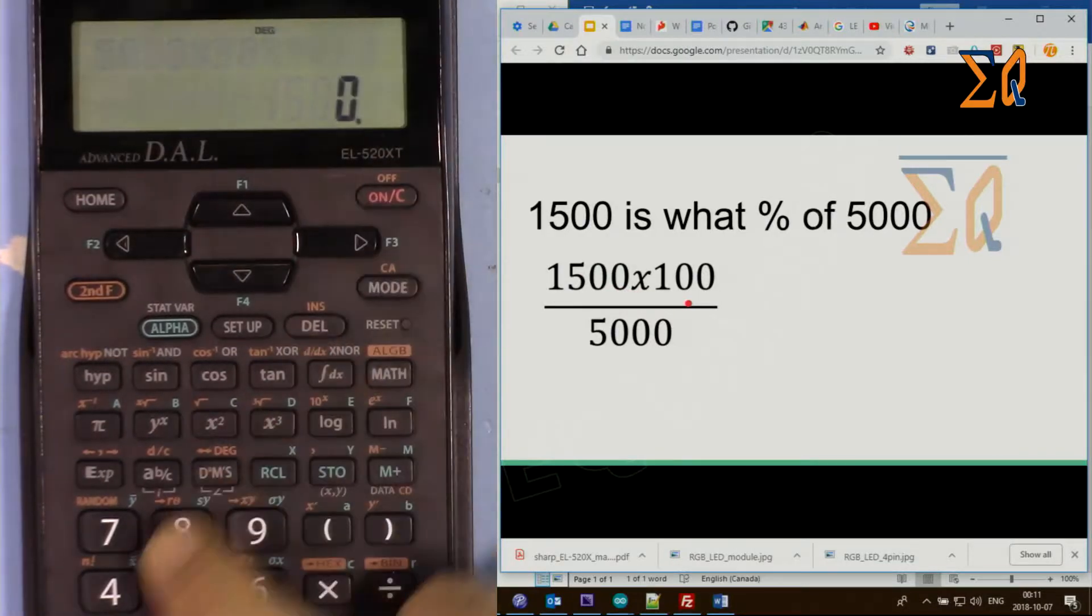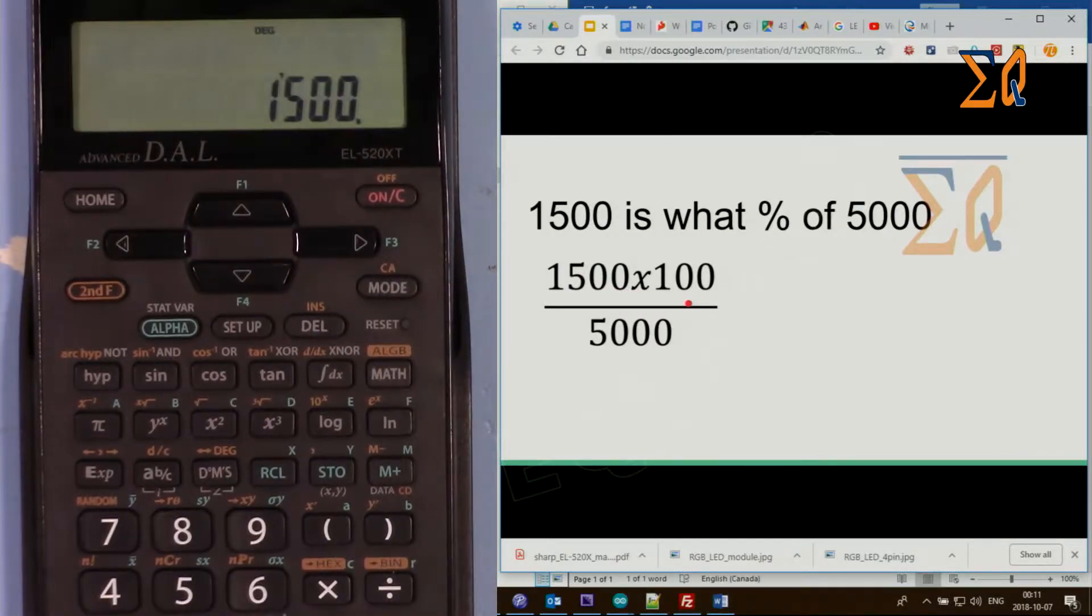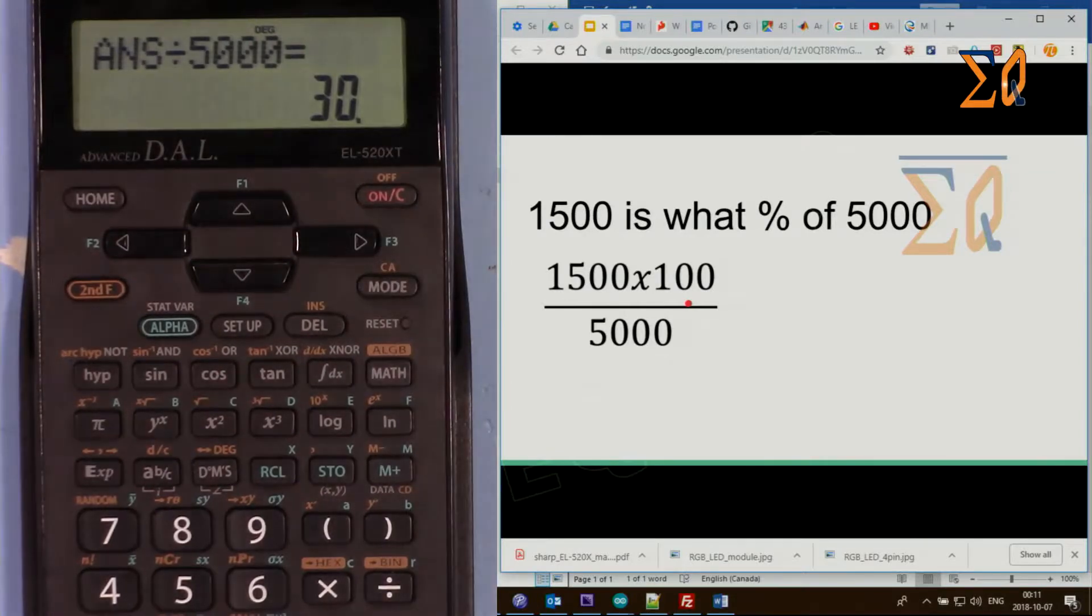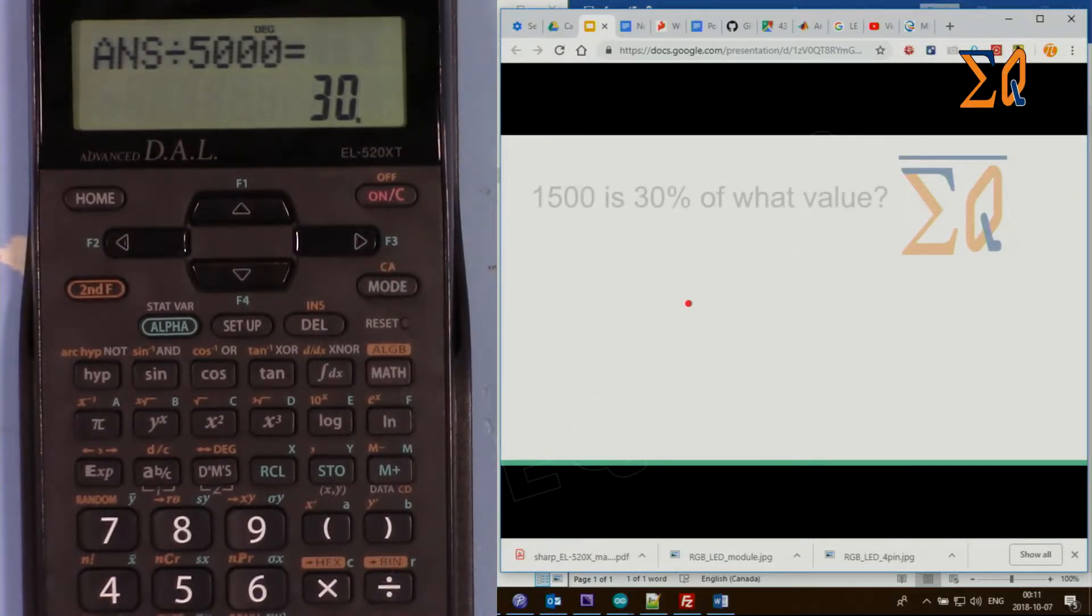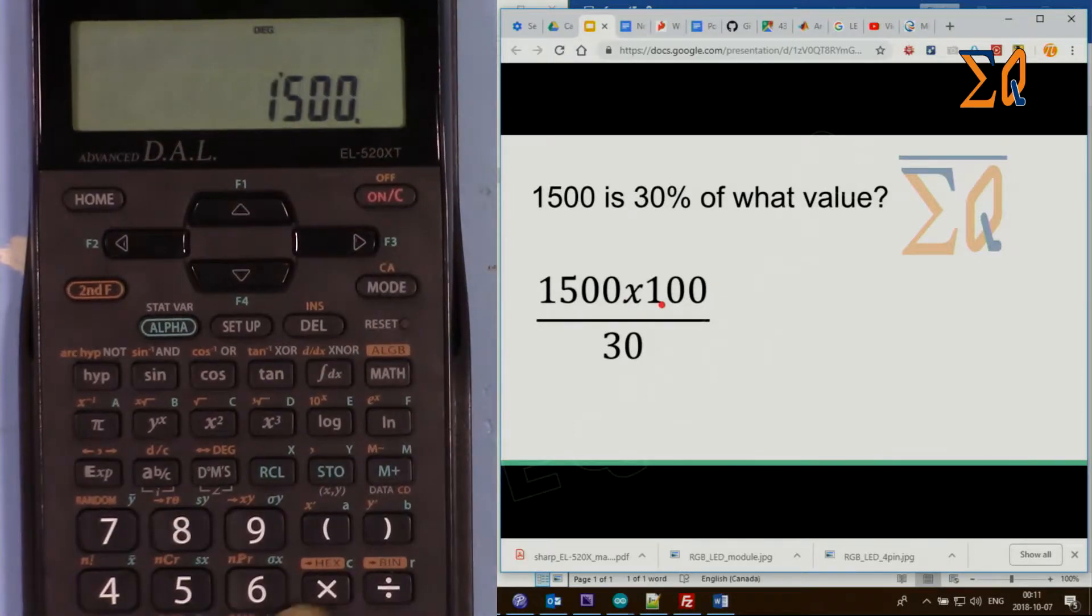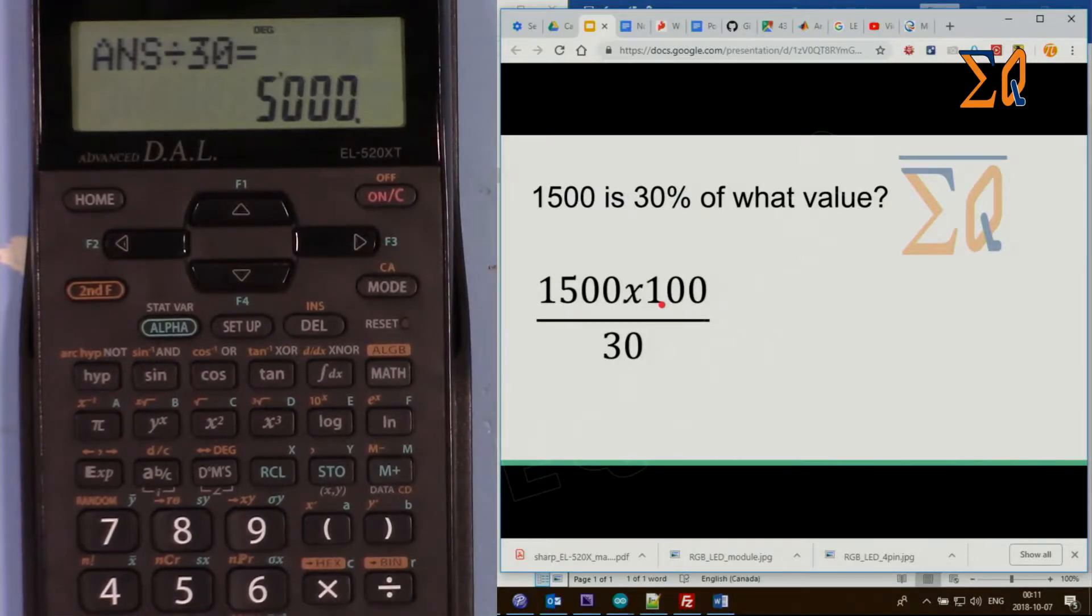We do 1,500 times 100, equal sign, divided by 5,000. Now if you have 1,500 is 30% of what value, we do it here: 1,500 times 100, equal, divided by 30, and we got 5,000. In both cases, if you pay attention...